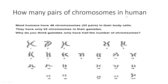How many pairs of chromosomes do humans have? 23. Humans have only 23 pairs of chromosomes. Why do gametes have only half the number of chromosomes? These 23 pairs separate out and move to different gametes. In sperm, they will separate — one gamete will have X, the other will have Y. One gamete gets one chromosome of each pair, the other gamete gets the other.